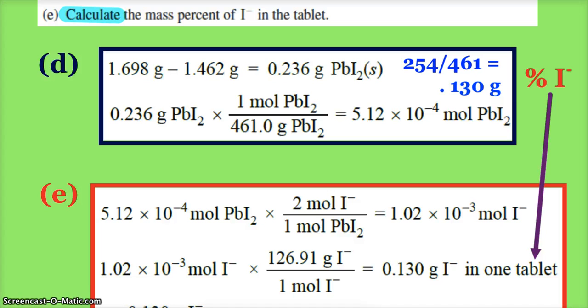So that 254 divided by 461 gives you the percent iodide, which is 55 percent. So the 0.236 grams times that 55 percent gives us 0.130 grams. So you can either go down and figure out the grams of iodide that way by the percent iodide, or you can say: since I know how many moles of PbI₂, there's 2 moles of iodide in every mole of lead(II) iodide, and then multiply by the mass.